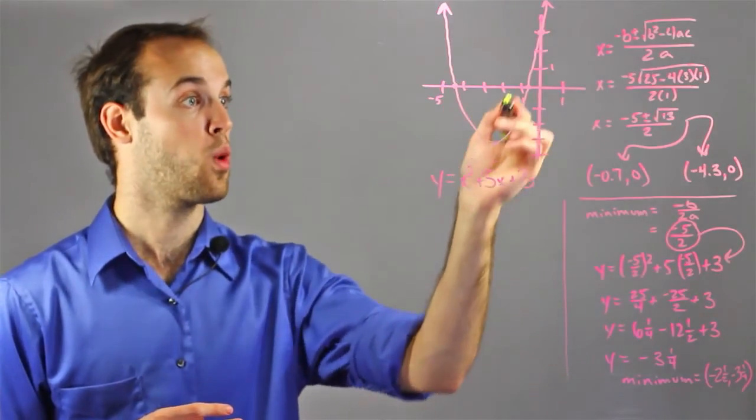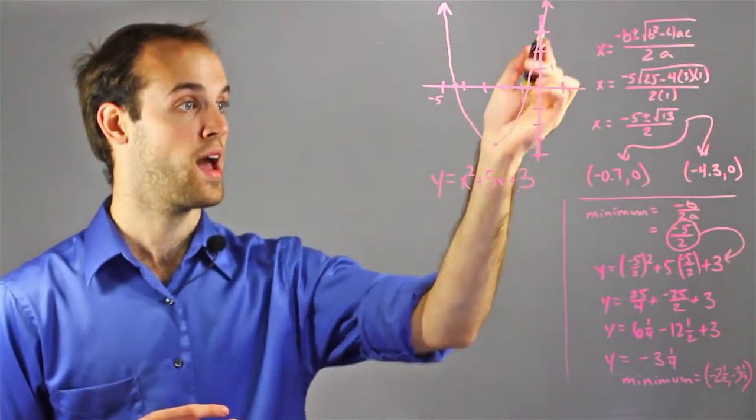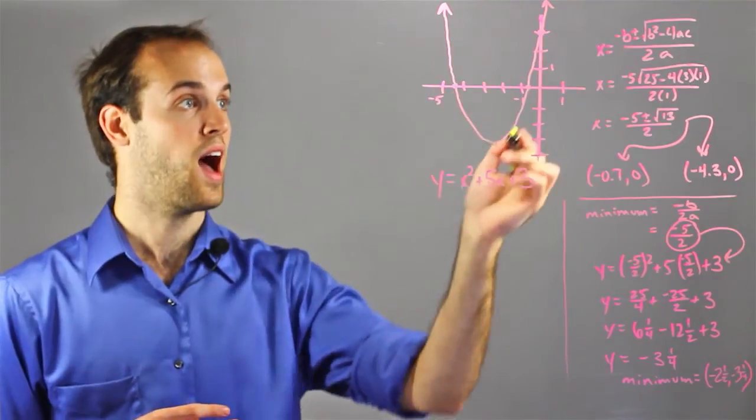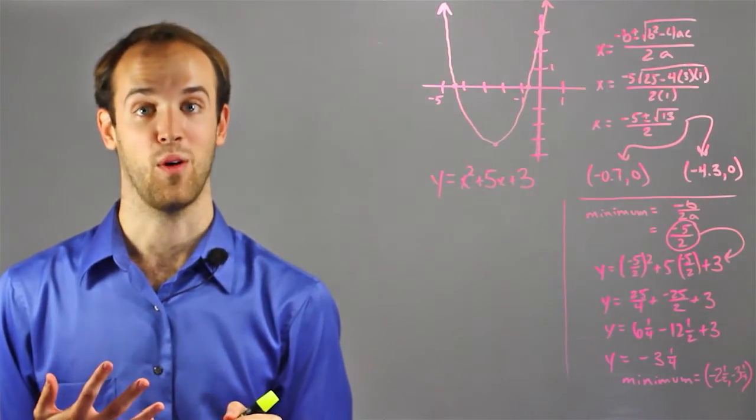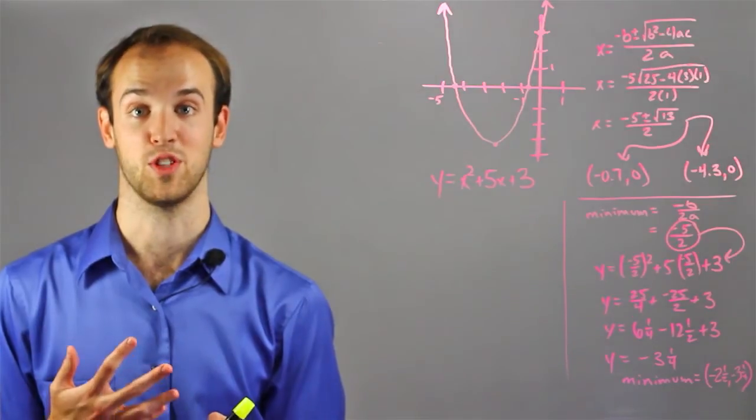So then once I have those four points—the two x-intercepts, the y-intercept, and the minimum value—I have enough to make good sense of what this parabola looks like. And now I can finally start to think about the domain and the range.